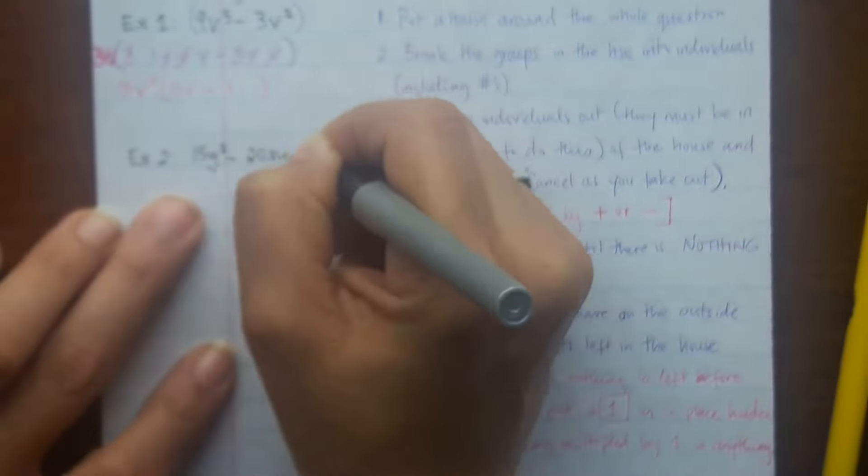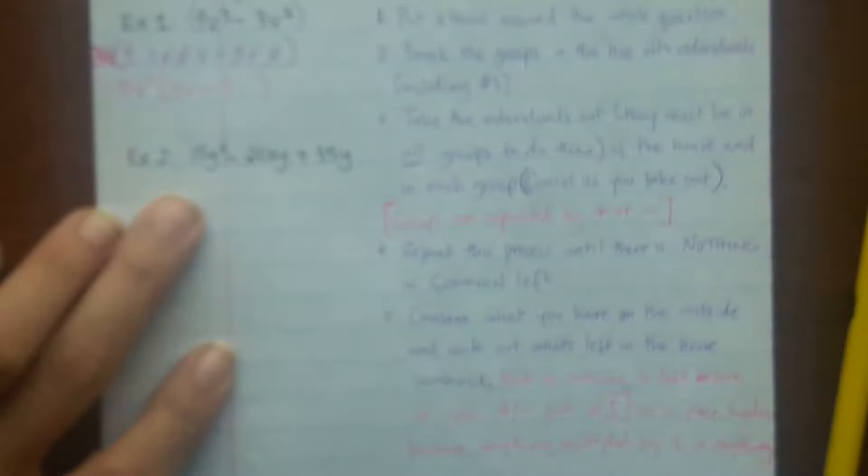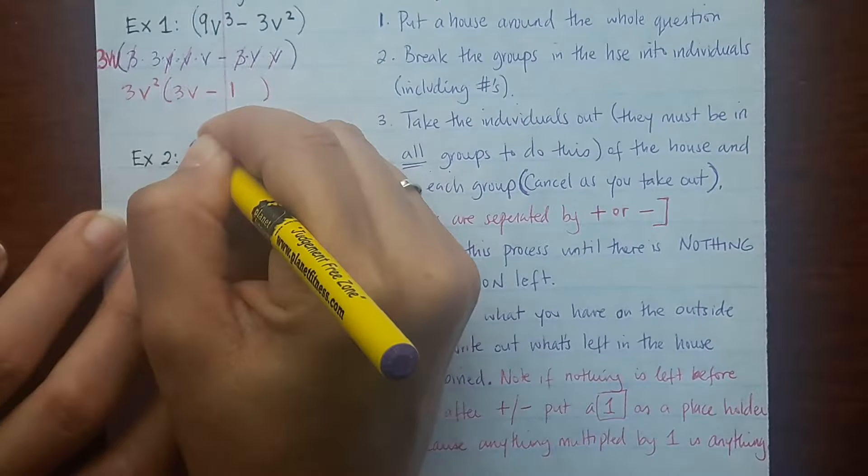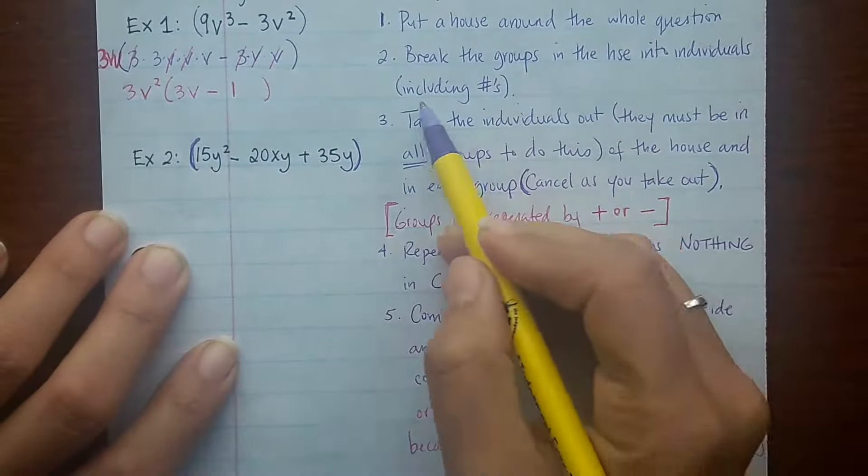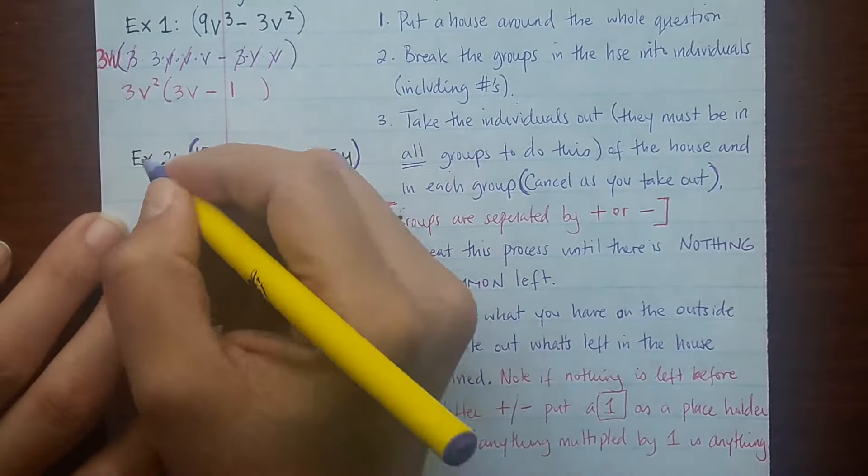Alright, Example 2. Let's say you have 15y² - 20xy + 35y. So first things first, put the house around it. Break it into groups. Break the groups into individuals. So we have 3 groups in this one.